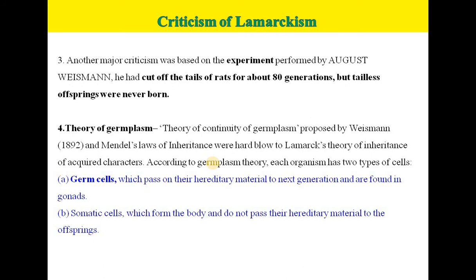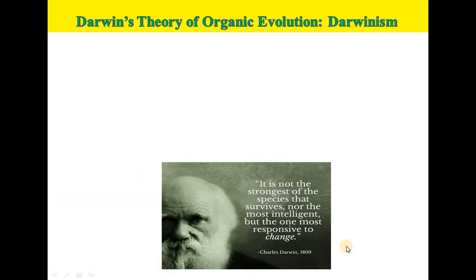According to the germplasm theory, each organism has two types of cells. First is germplasm, which passes on hereditary material to the next generation and is found in the gonads. Second is somatic cells, which form the body and do not pass their hereditary material to the offspring.